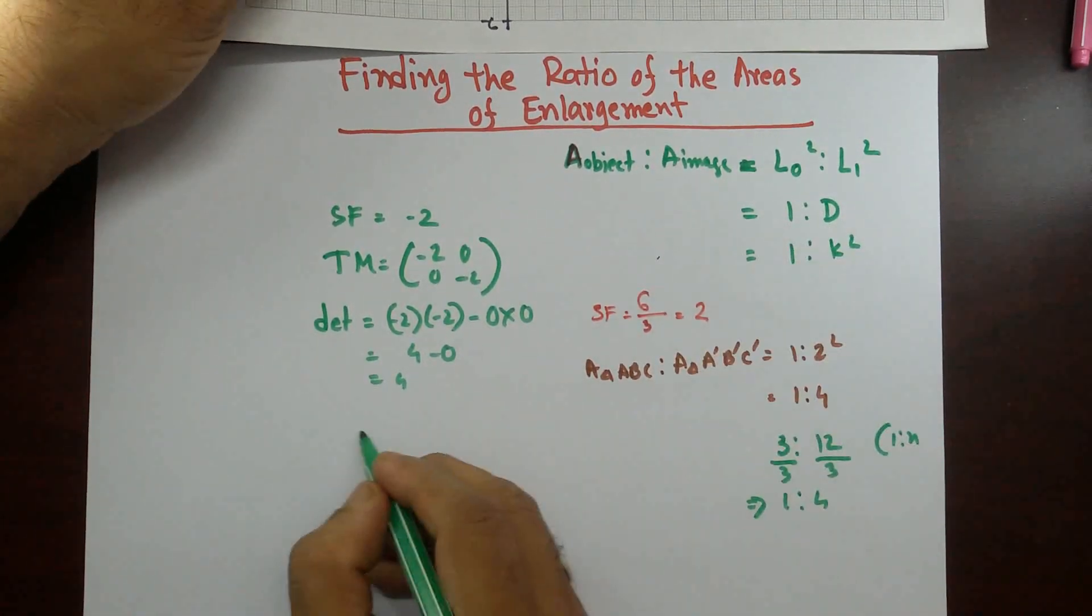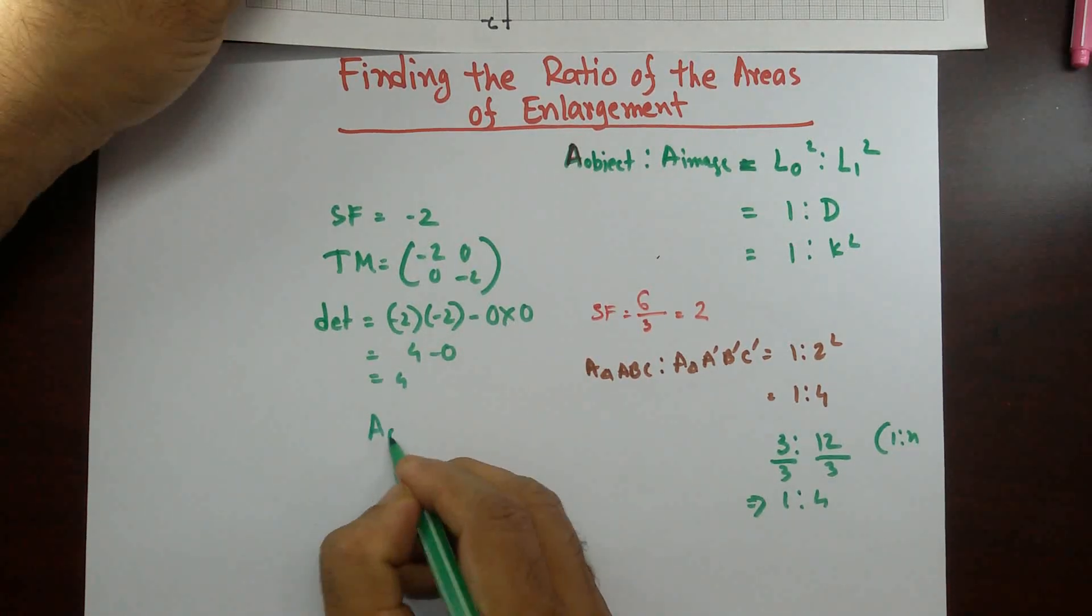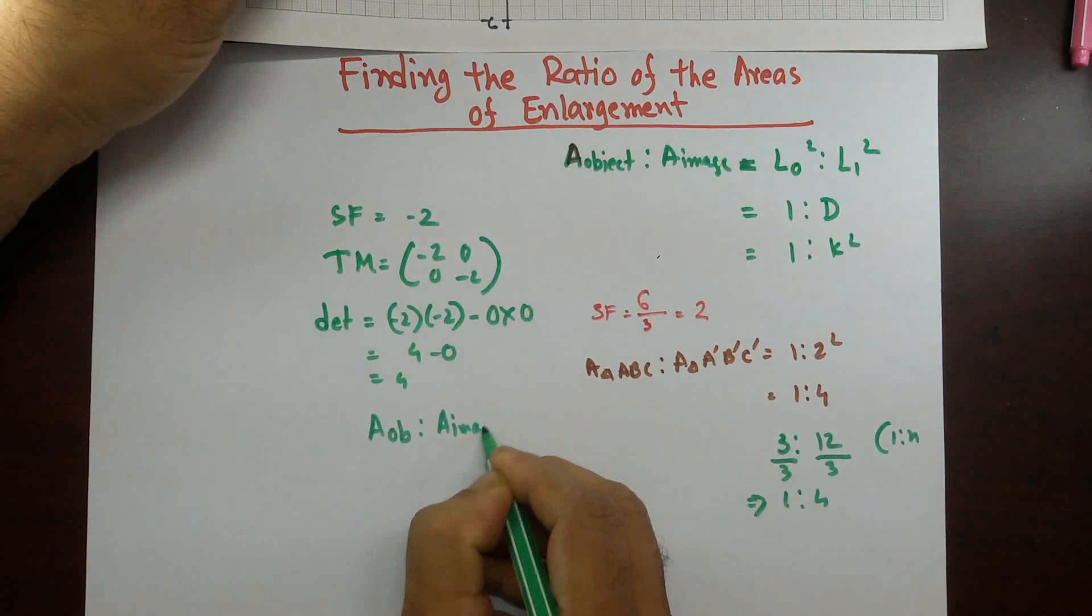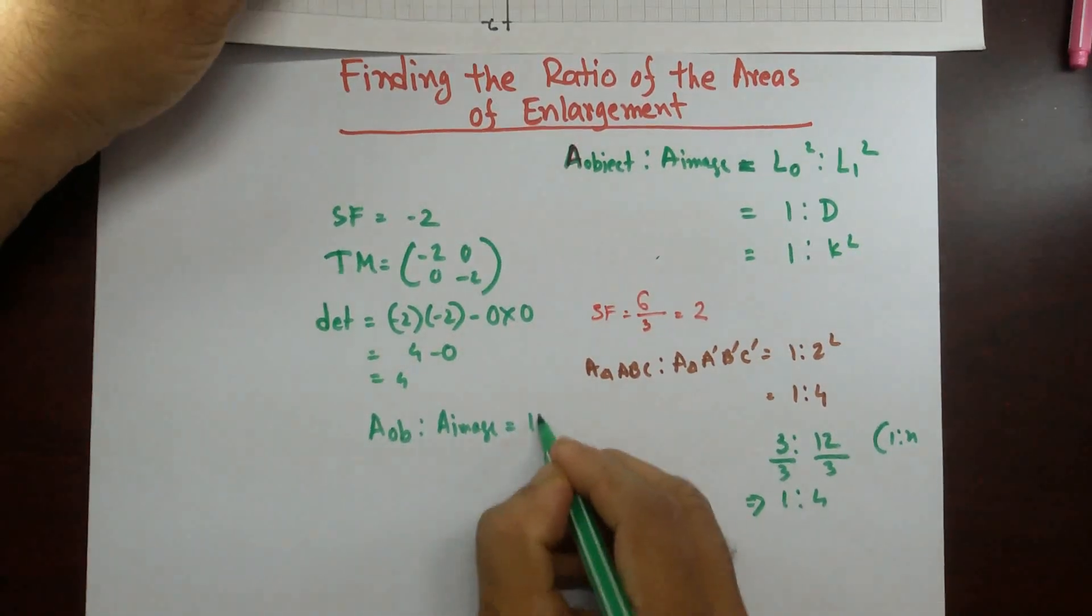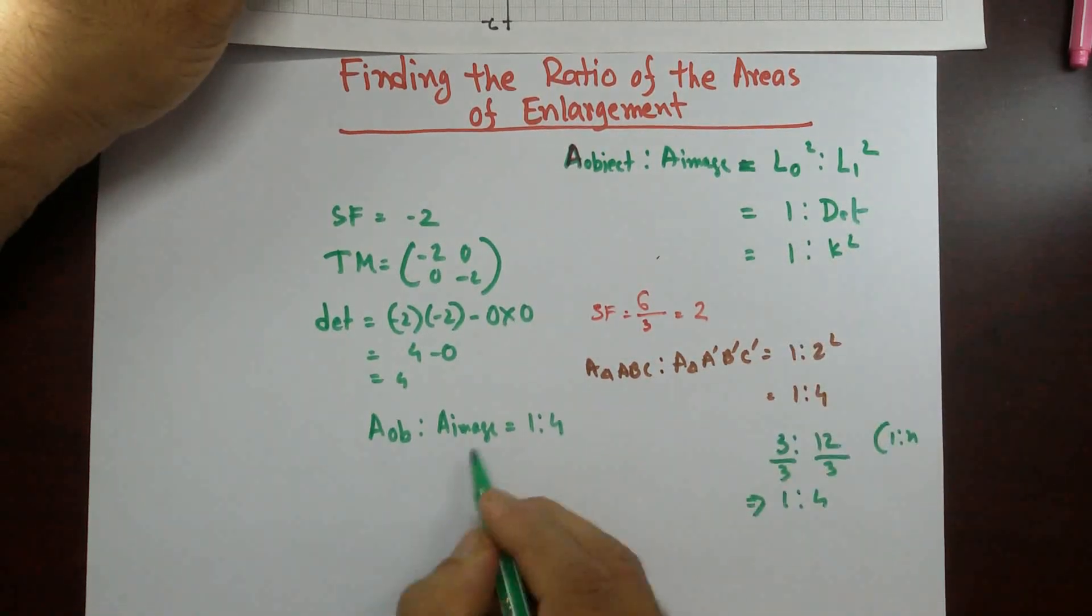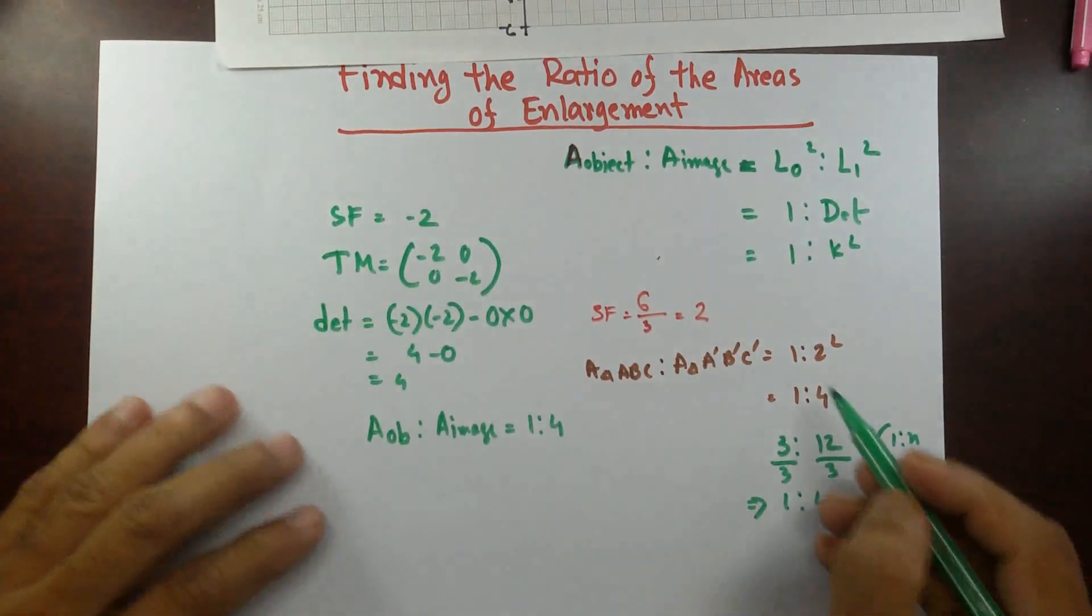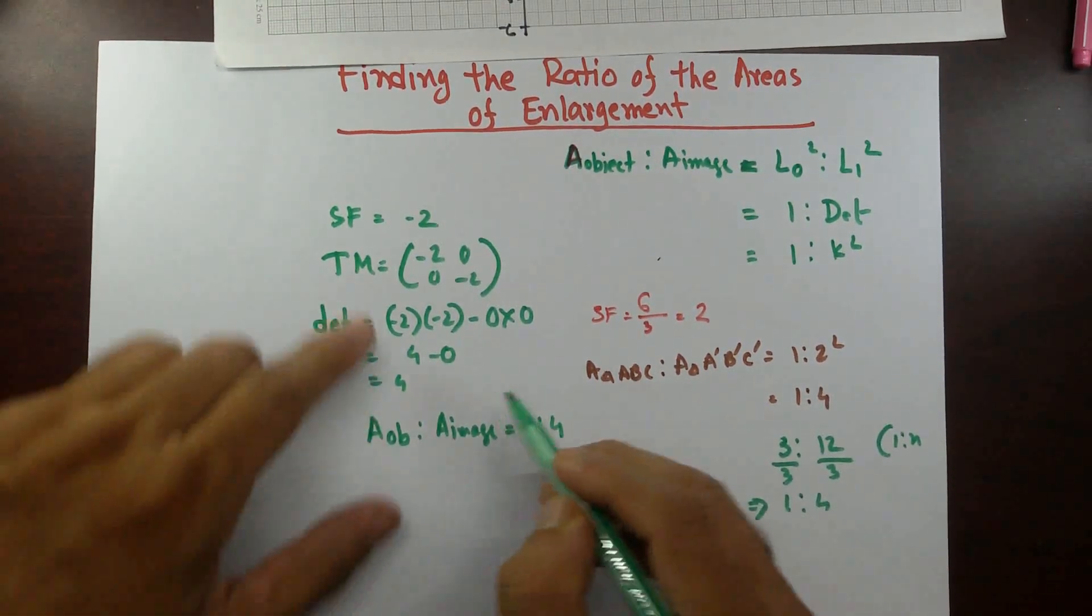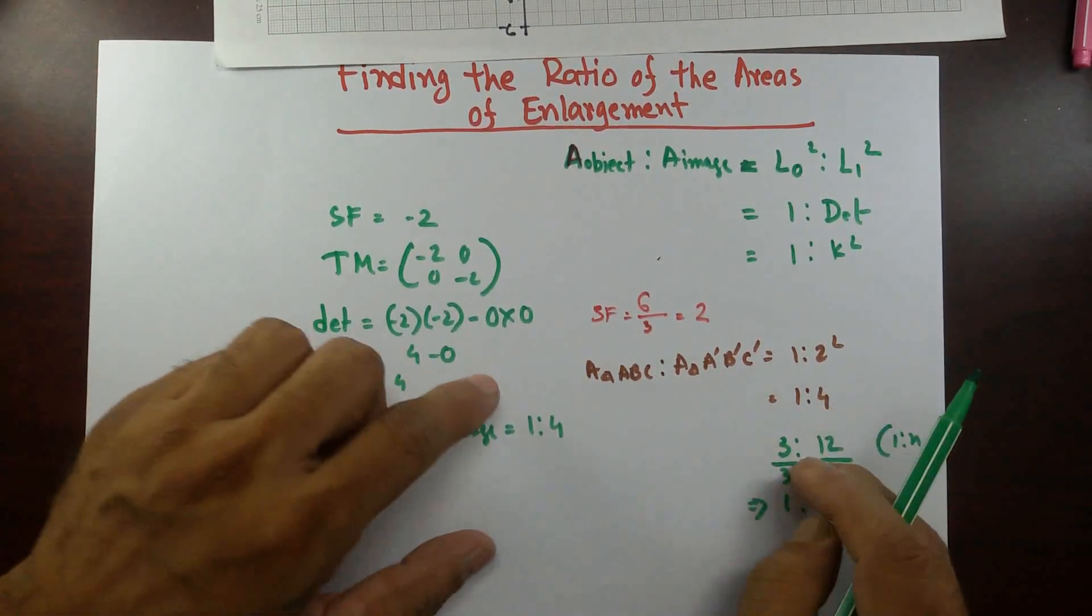So if you are using this formula, then area of the object is to area of the image equal to 1 is to 4, 1 is to determinant. You can put determinant and 1 is to 4. So it doesn't matter how you use that scale factor squared or 1 is to the determinant. You always can get that.